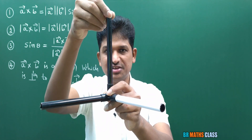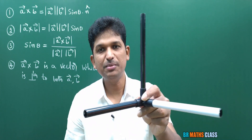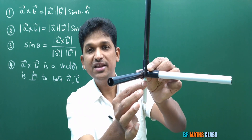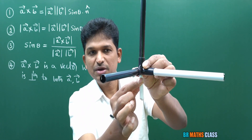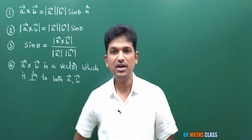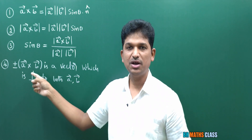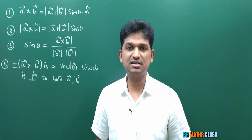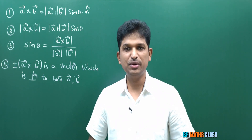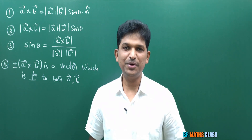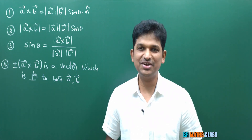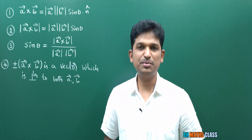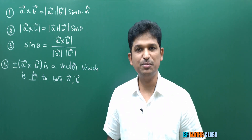If this is A bar and this is B bar, then A bar cross B bar points perpendicular to both. What about minus of A bar cross B bar? Minus of A bar cross B bar is also perpendicular to both A bar and B bar. So the conclusion is: A bar cross B bar is a vector perpendicular to both A bar and B bar, and minus of A bar cross B bar is also a vector perpendicular to both A bar and B bar. In exercise problems, if they ask for a vector perpendicular to both A bar and B bar, calculate A bar cross B bar.